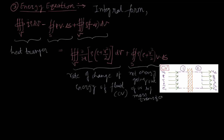Some mass of fluid is coming inside the control volume at a particular velocity U1, and some mass of fluid is going out at a velocity U2.